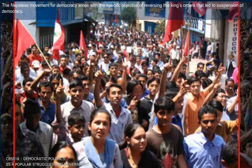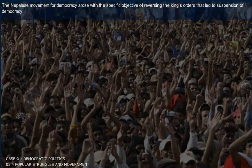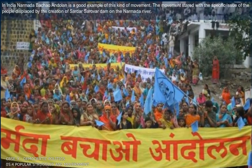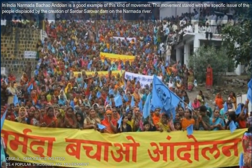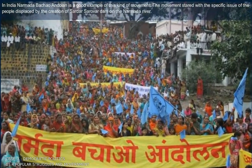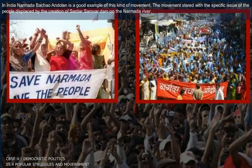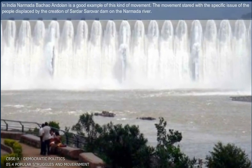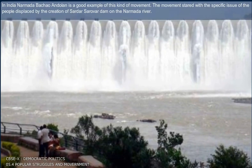The Nepalese movement for democracy arose with the specific objective of reversing the king's order that led to suspension of democracy. In India, Narmada Bachao Andolan is a good example of these kinds of movements. The movement started with the specific issue of the people displaced by the creation of Sardar Sarovar Dam on the Narmada River.